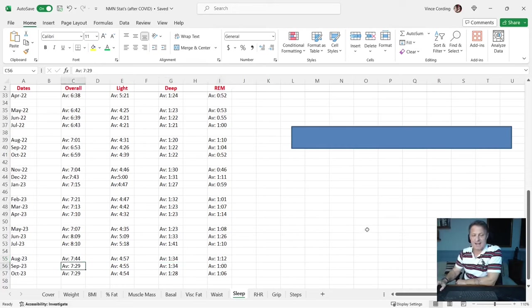In September, average overall was seven hours 29, so that's good because I want to be just over seven hours. Between seven and eight hours, they reckon is optimal. My light sleep for September was four hours 55. Deep sleep was one hour 34 again, which is great. And my REM sleep was exactly one hour as an average for September.